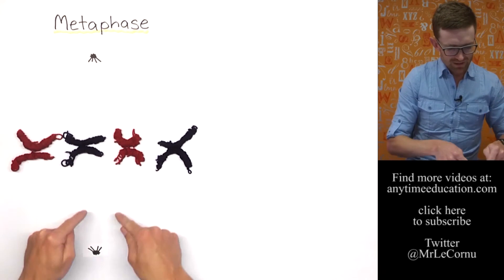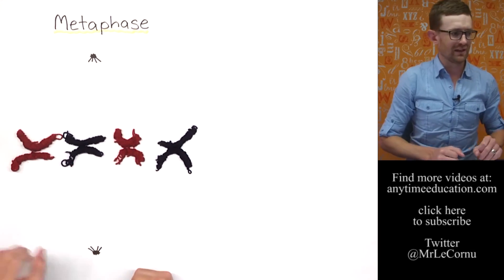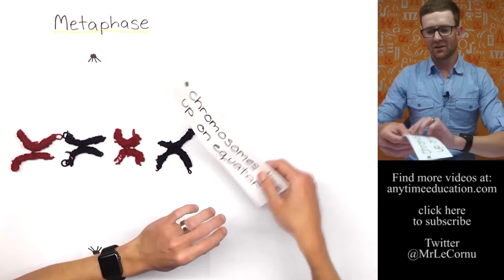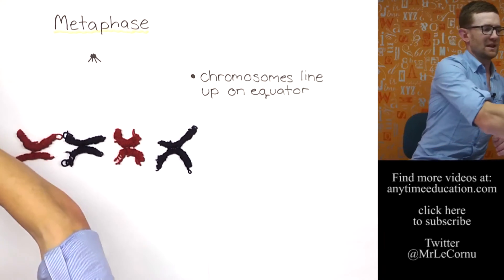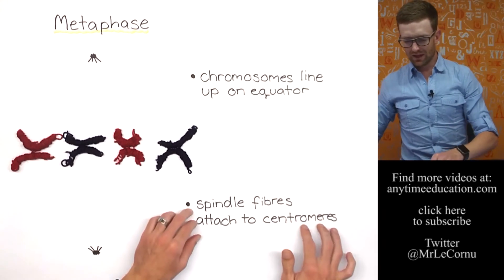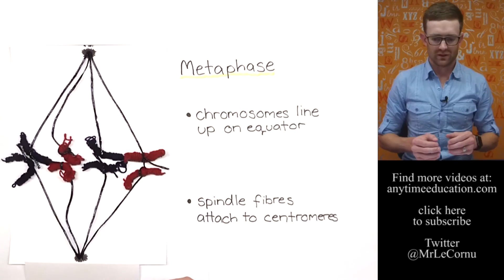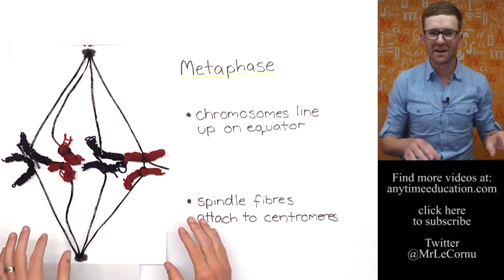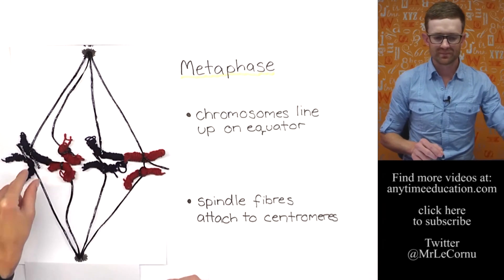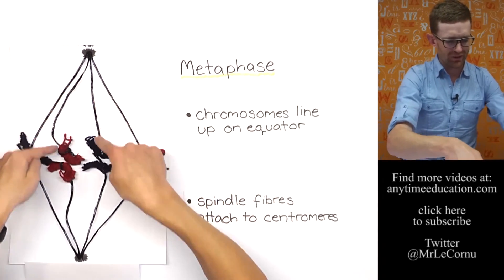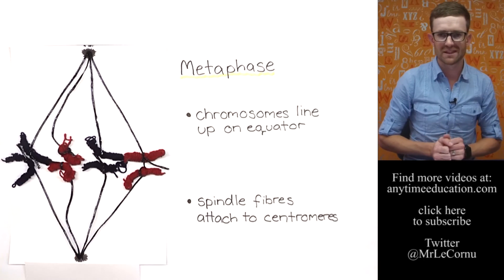The spindle fibers are attached to each of the chromosomes. I haven't shown that yet, so we'll bring that in in a minute. But first of all, the chromosomes have lined up on the equator and the spindle fibers are going to be attached to the centromeres. Let's have a look at what that looks like. Okay, so here's metaphase. The chromosomes are lined up along the equator. The spindle fibers, which are these black fibrous things, they are holding the chromosomes in place.